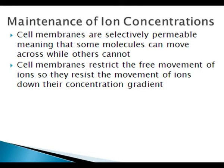Next we will talk about how these ion concentrations are maintained. Cell membranes are selectively permeable, meaning that some molecules can move freely across while others cannot. Cell membranes restrict the free movement of ions, resisting the movement of ions down their concentration gradient. If the cell membrane were freely permeable to ions, the ions would just rush down their concentration gradients, and you would have no ionic gradients.